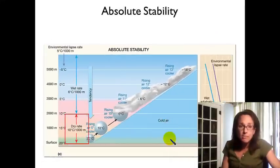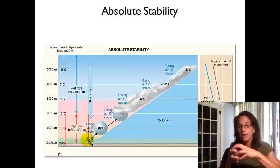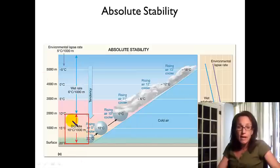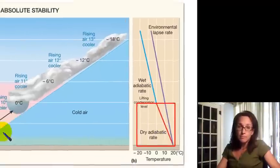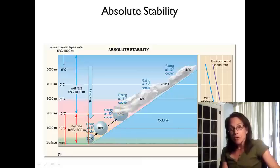As an air mass rises, it cools adiabatically. Adiabatic cooling happens because the air mass expands as pressure decreases — just like letting air out of your bike tire. The rate at which unsaturated, or dry, air rises and cools is called the dry adiabatic rate, which is ten degrees Celsius per thousand meters. Notice on the graph this is a steeper change in temperature with elevation than the environmental lapse rate, meaning the rising air remains cooler than the surrounding air. In this example, a wedge of cold air is pushing the air mass up, but the rising air is still colder than the surrounding air, so it is stable.